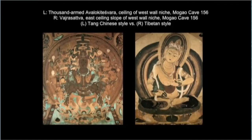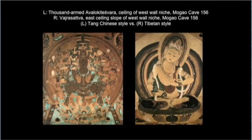Scholars now acknowledge that even after the reclaiming of Dunhuang by the Return to Allegiance Army, Tibetan linguistic, cultural, and artistic norms continued to circulate in the Gansu corridor even after the establishment of the Guiyijun. Zhang Yichao was known to have been a devout Buddhist raised entirely in the multicultural environment of the Tibetan occupation of Dunhuang — he had never known anything but Tibetan rule. He not only copied out Chinese sutras to accrue merit, but also copied Tibetan Buddhist texts and even took a Tibetan name. Even well after the fall of the Tibetan Empire, the Tibetan language and writing system continued to be used in Dunhuang even by non-Tibetans, serving as a lingua franca well into the 10th century.